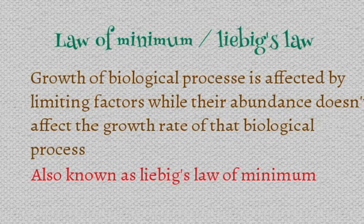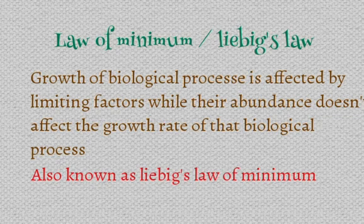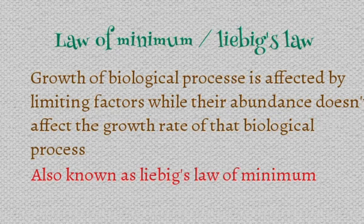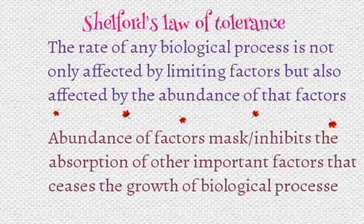The next law is Liebig's law of minimum, given by Liebig. According to this law, the growth of biological processes is affected by limiting factors, while their abundance is not going to affect the growth rate or development of any biological process. Liebig added one more point to Blackman's law: if the limiting factors are present in abundance, they are not going to affect the rate of photosynthesis. So if carbon dioxide is present in abundance, it's not going to affect the rate of photosynthesis.